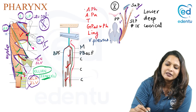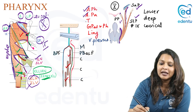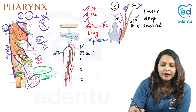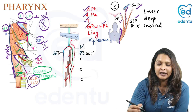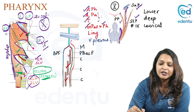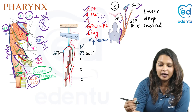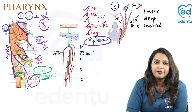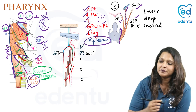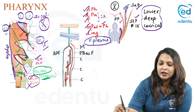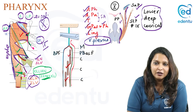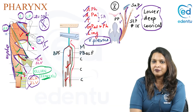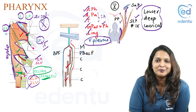The arterial supply of the pharynx is by the ascending pharyngeal artery, ascending palatine artery, tonsillar artery, greater palatine artery, and pharyngeal branches from the maxillary artery — with the tonsillar and ascending palatine arteries from the facial artery — as well as the lingual artery. Venous drainage is into the pharyngeal venous plexus. Lymphatic drainage is into the lower deep cervical group of lymph nodes. This concludes the important information related to the anatomy of the pharynx.